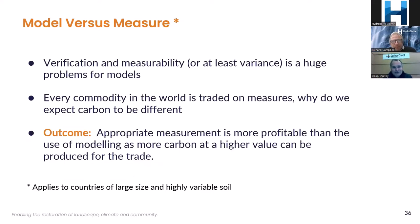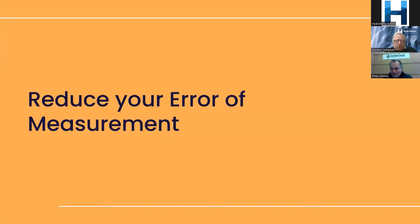Verification and measurability — or at least the variance of measurability — is a huge problem for models. Every commodity in the world is traded on measures. So why do we expect carbon to be different? Appropriate measurement is more profitable than the use of modelling, as more carbon at a higher value can be produced for trade.